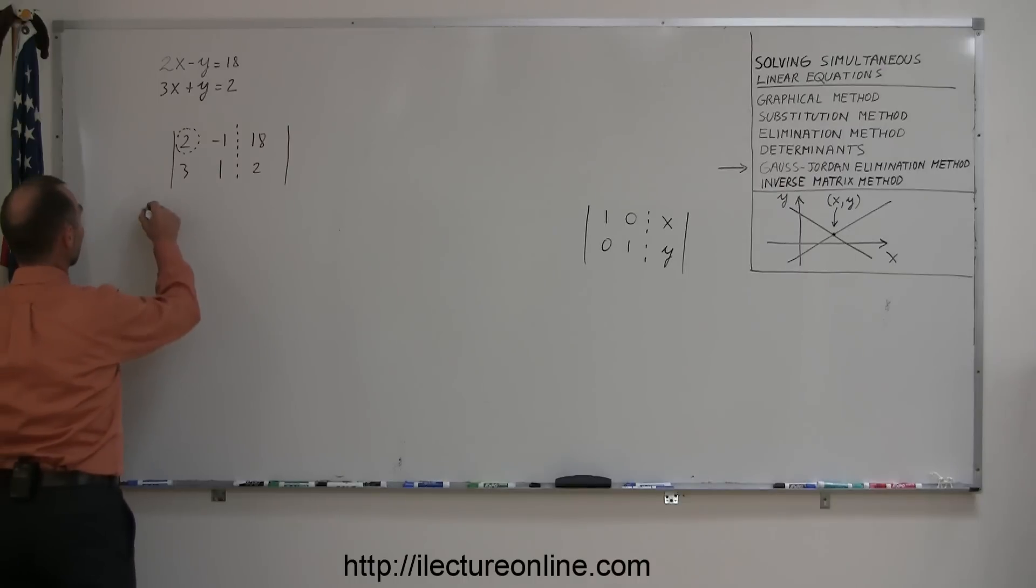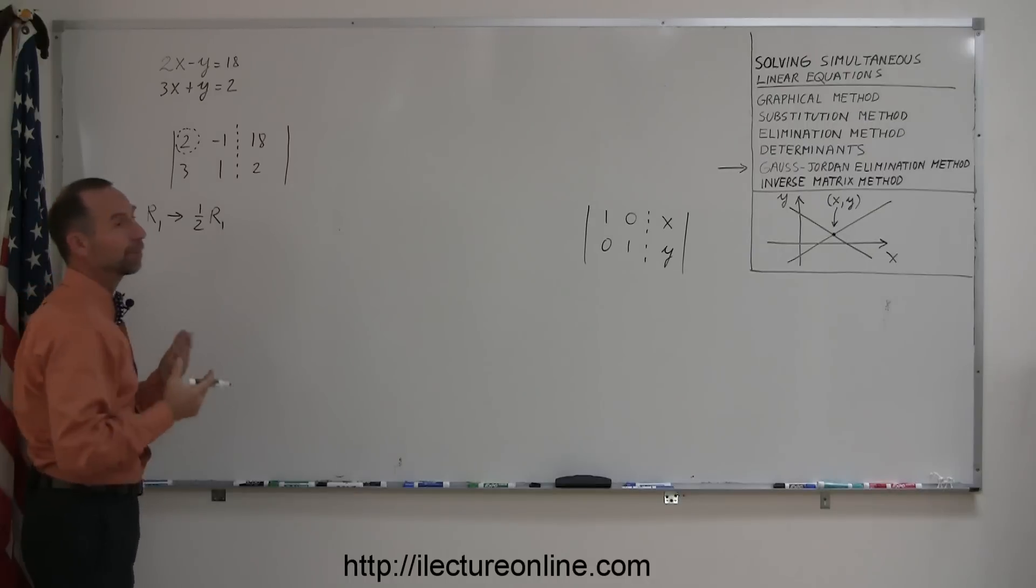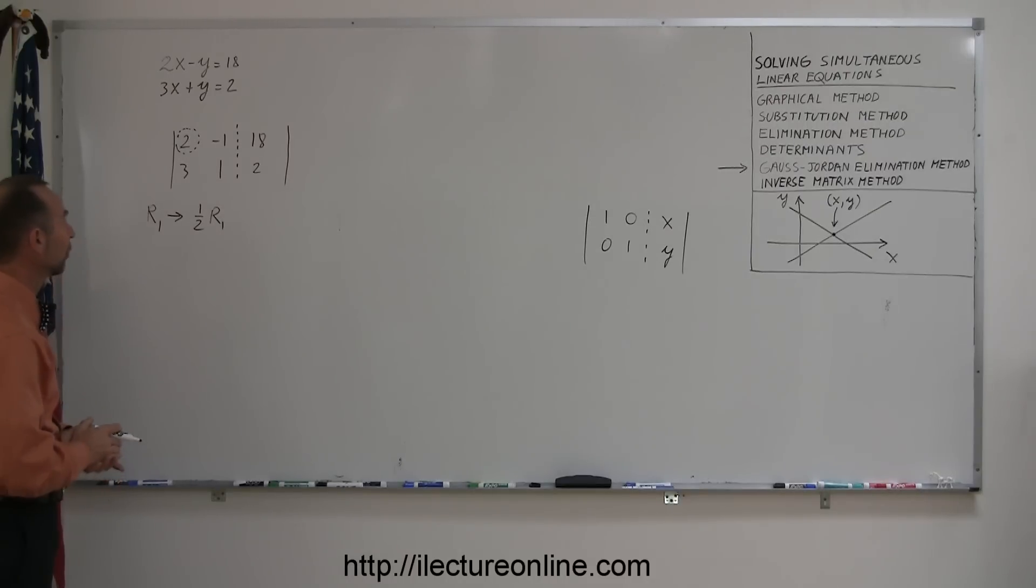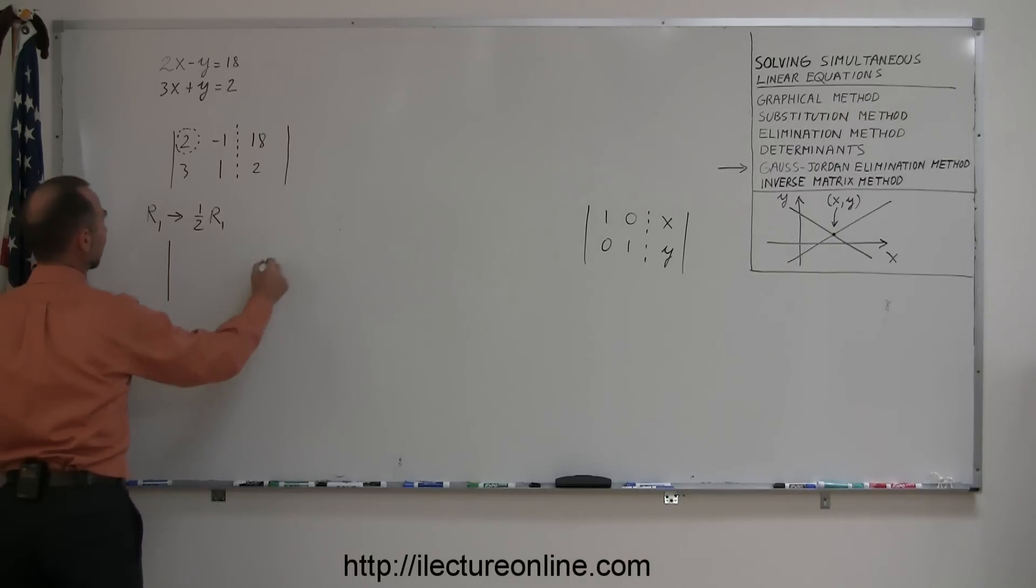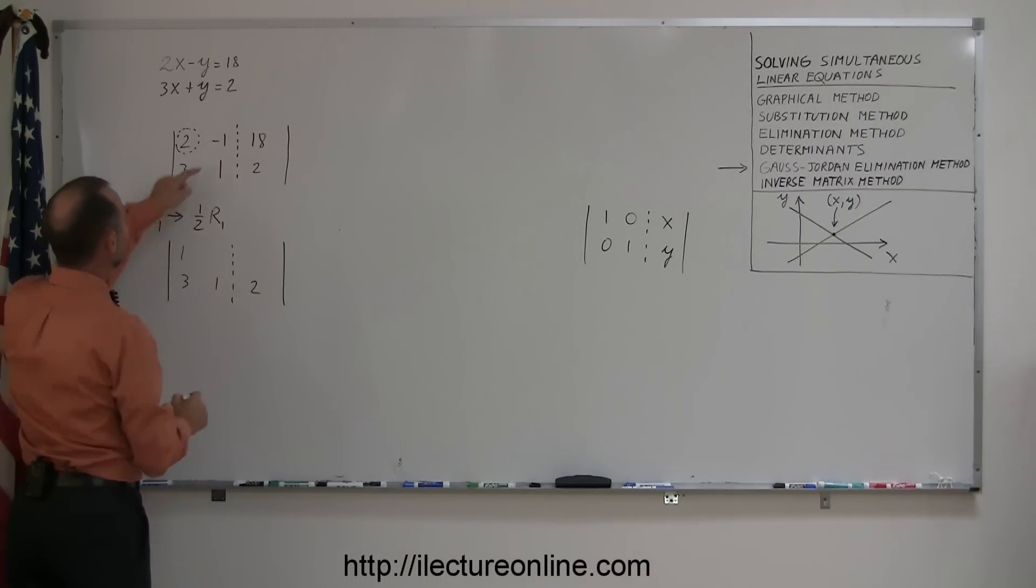So I'm going to take the first row, row 1, and change it to half of row 1, or replace it by half the original row. In other words, I'm going to take every number and simply divide it by 2. When I do that, I get the following thing. I don't do anything to the second row, so that stays as a 3, a 1, and a 2. But I take the 2 divided by 2, I get 1. I take the negative 1 divided by 2, I get a negative 1 half. I take the 18 divided by 2, and I get a 9. So I'm part way there. I turned the 2 into a 1.